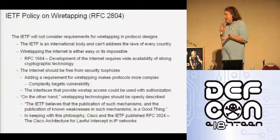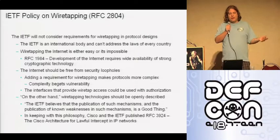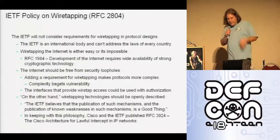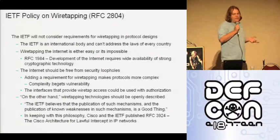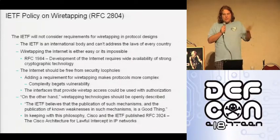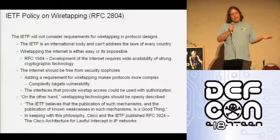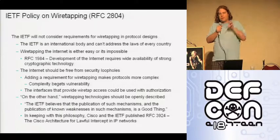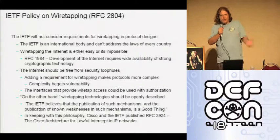Another IETF argument was that the internet should be free from security loopholes. If you built interfaces into the internet that enabled wiretapping, someone might misuse them or gain unauthorized access. However, they did say that if you were going to design a surveillance system into the internet, you should tell everyone how you did it and publish the details of your architecture. This allows peer review so people can check for security weaknesses, and it aligns with the principle that the internet's underpinnings are available for all to read in RFCs.